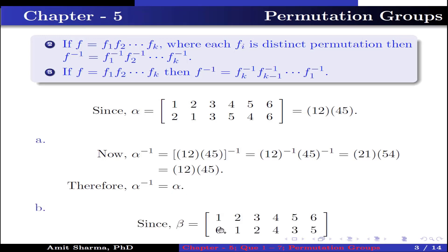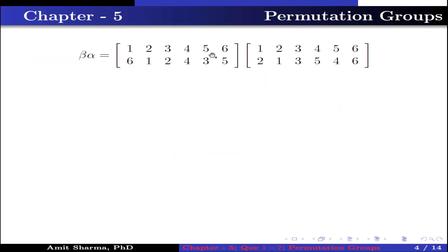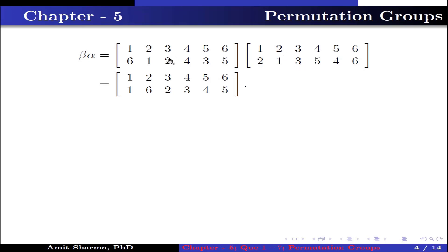Part B. Since beta is the permutation in which 1 has image 6, 2 has image 1, 3 has image 2, 4 has image 4, 5 has image 3 and 6 has image 5, the product beta alpha is computed by moving from right to left. Here: 1 maps through alpha to 2, then 2 maps through beta to 1, so 1 has image 1. 2 maps through alpha to 1, then 1 maps through beta to 6, so 2 has image 6. 3 maps to 3 then to 2, so 3 has image 2. 4 maps to 5 then to 3, so 4 has image 3. 5 maps to 4 then to 4, so 5 has image 4. 6 maps to 6 then to 5, so 6 has image 5.